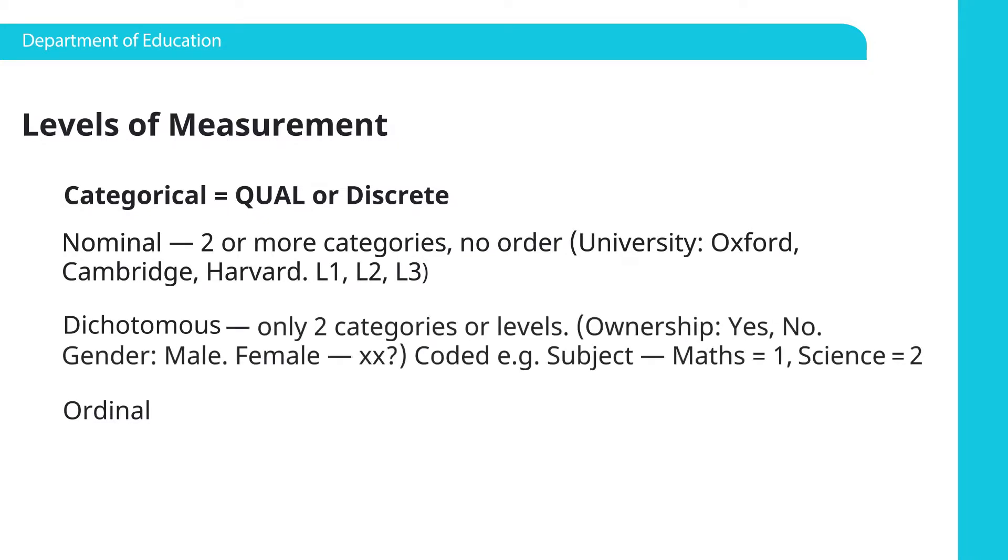So dichotomous variable only has two categories. Dichotomous, so two. For example, do you own a car? Yes or no. Are you going to operationalize gender as binary, male or female? Or, for example, subject. So we're looking at maths and science learning outcomes. So one and two. So there are two categories there. Again, this doesn't have any order to it. Maths or science. There's no order there.